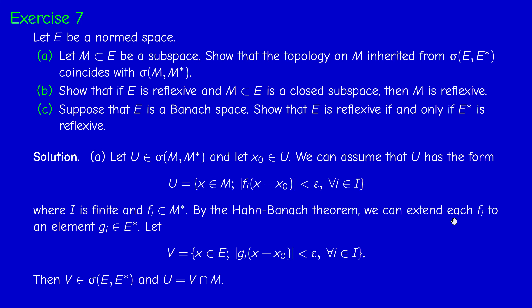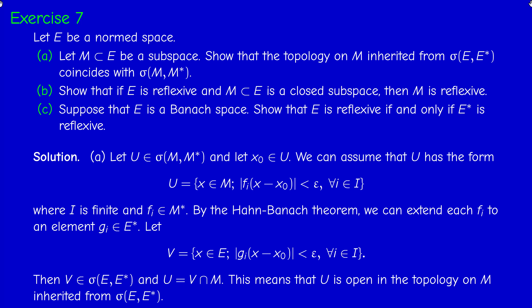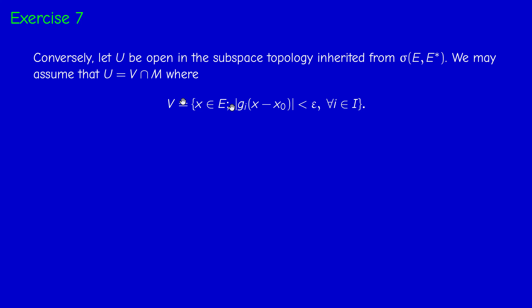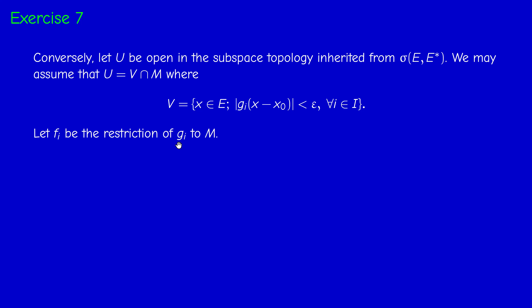Now we prove the reverse inclusion. We take an element of the subspace topology and show it belongs to the weak topology of M. The set U is open in the subspace topology, so it is necessarily an intersection of a weakly open set V of E and M. We can assume V is a basic set. Now it's easier — we don't have to extend, we just restrict Gi to M.